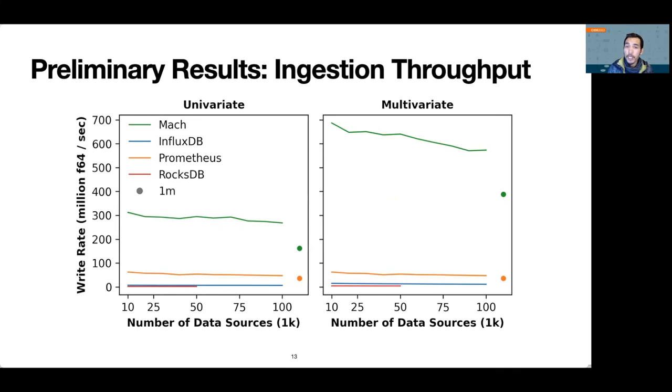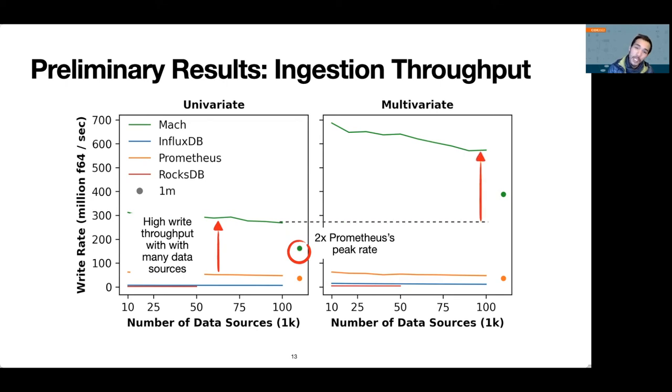Next, we evaluated Mach's ability to ingest data from many sources. The x-axis shows the number of data sources, and the y-axis also shows write throughput in millions of floats per second. We used 32 writer threads in this experiment. Because of Mach's ability to scale with the number of writers, it can handle many sources far better than Prometheus. At one million sources writing to a single machine, Mach achieves two times Prometheus's peak write throughput. We also see the same write throughput increase when writing multivariate data, and both InfluxDB and RocksDB timed out in this experiment.